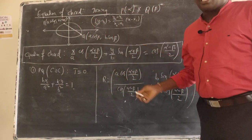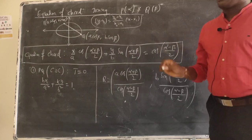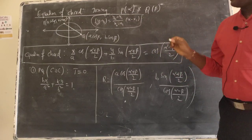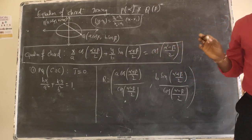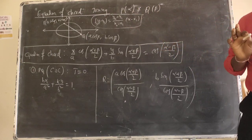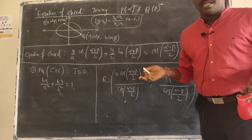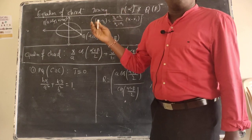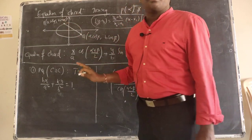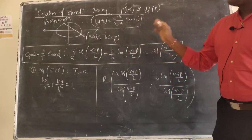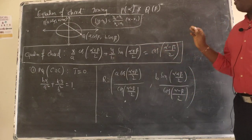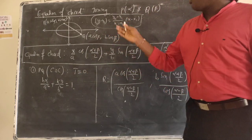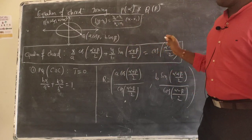This formula was explained in the second lecture, but today I want to explain more. So the equation of the chord is (x/a)·cos[(α+β)/2] + (y/b)·sin[(α+β)/2] = cos[(α−β)/2]. If parametric points are given, use this formula. If general points are given — like (2,3) and (4,3) — use the standard line equation directly.